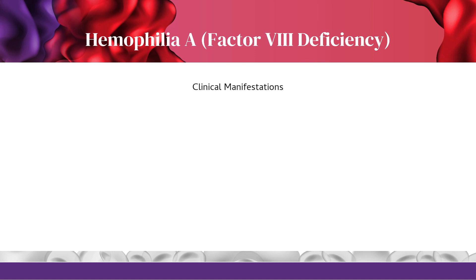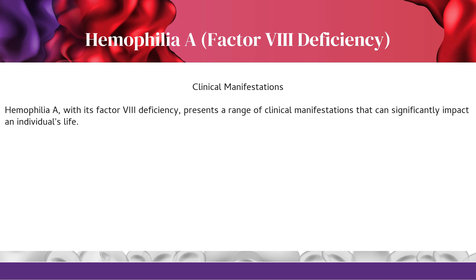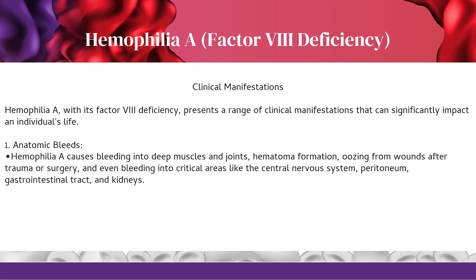Continuing our exploration of hemophilia A's clinical manifestations: Hemophilia A, with its Factor 8 deficiency, presents a range of clinical manifestations. It causes bleeding into deep muscles and joints, hematoma formation, oozing from wounds after trauma or surgery, and even bleeding into critical areas like the central nervous system, peritoneum, gastrointestinal tract, and kidneys.